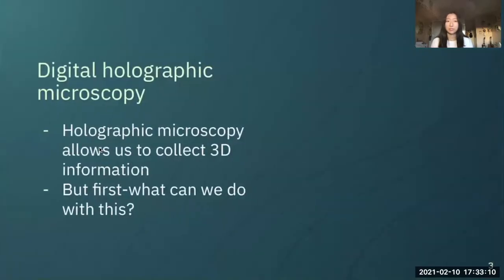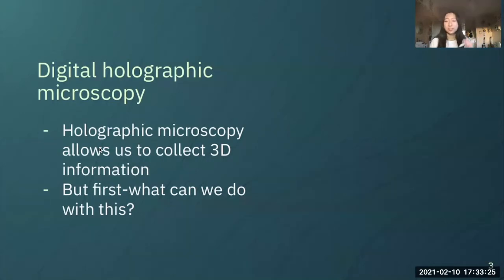First things first, digital holographic microscopy. What does this exactly mean? Holographic microscopy is the process that allows us to collect 3D information about an object, as opposed to a flat normal 2D image. The digital part of this just means that we capture it with a camera such that we can reconstruct the 3D object based off this 2D image collected from a normal camera.